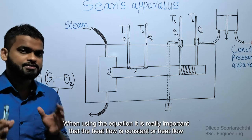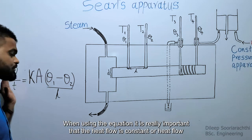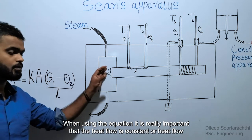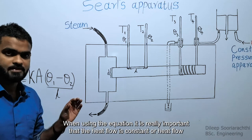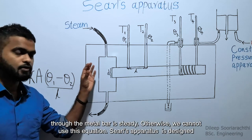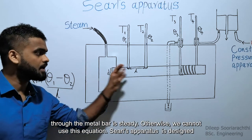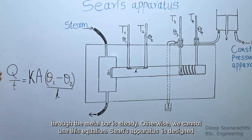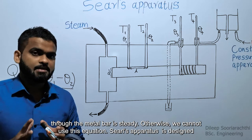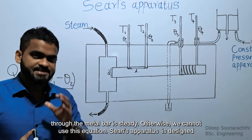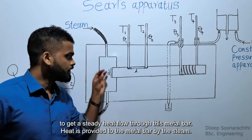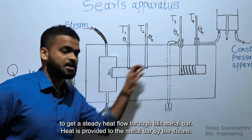When using the equation, it is really important that the heat flow is constant — that is, the heat flow through the metal bar is steady. Otherwise, we cannot use this equation. The cell separators apparatus is designed to achieve a steady heat flow through the metal bar.